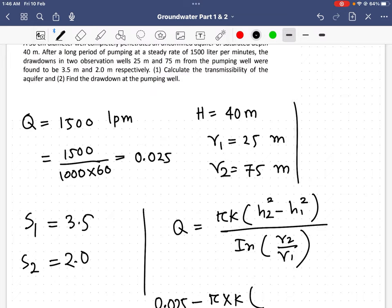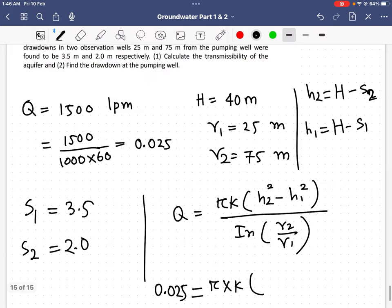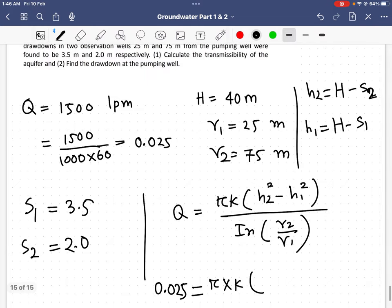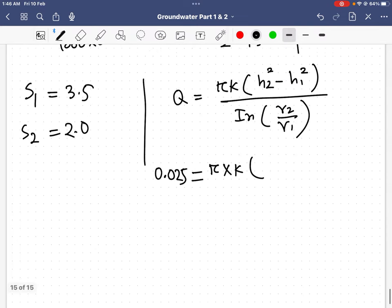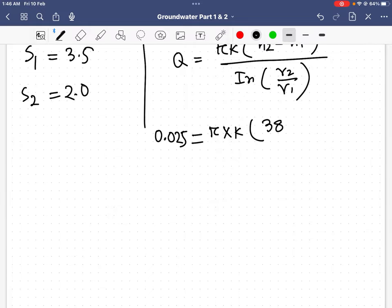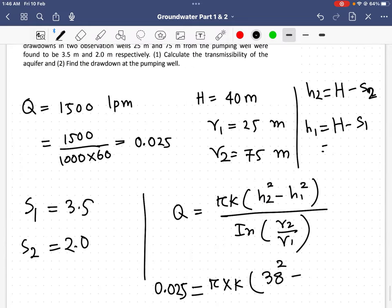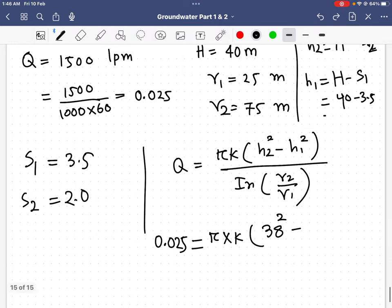I will get h2 from this formula: h2 equals H minus s2, and h1 equals H minus s1. My H is 40, so if I subtract s2 value of 2, I will get 38. For h1, my H value is 40, I subtract s1 value of 3.5, then I get 36.5.